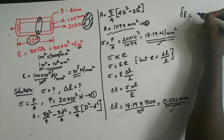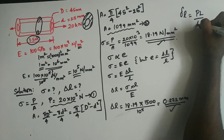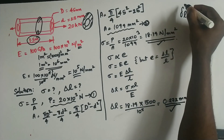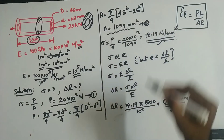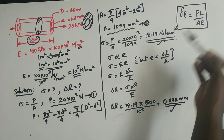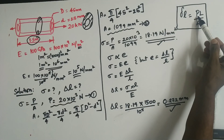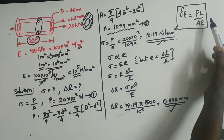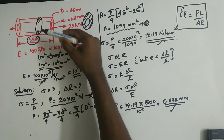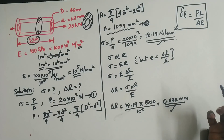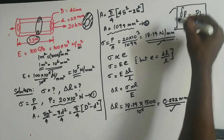An alternative direct formula for deformation is delta L equals PL by AE, where P is the load, L is the length of the rod, A is the cross-section area, and E is the Young's modulus. This formula is useful for future problems and gives the same result.